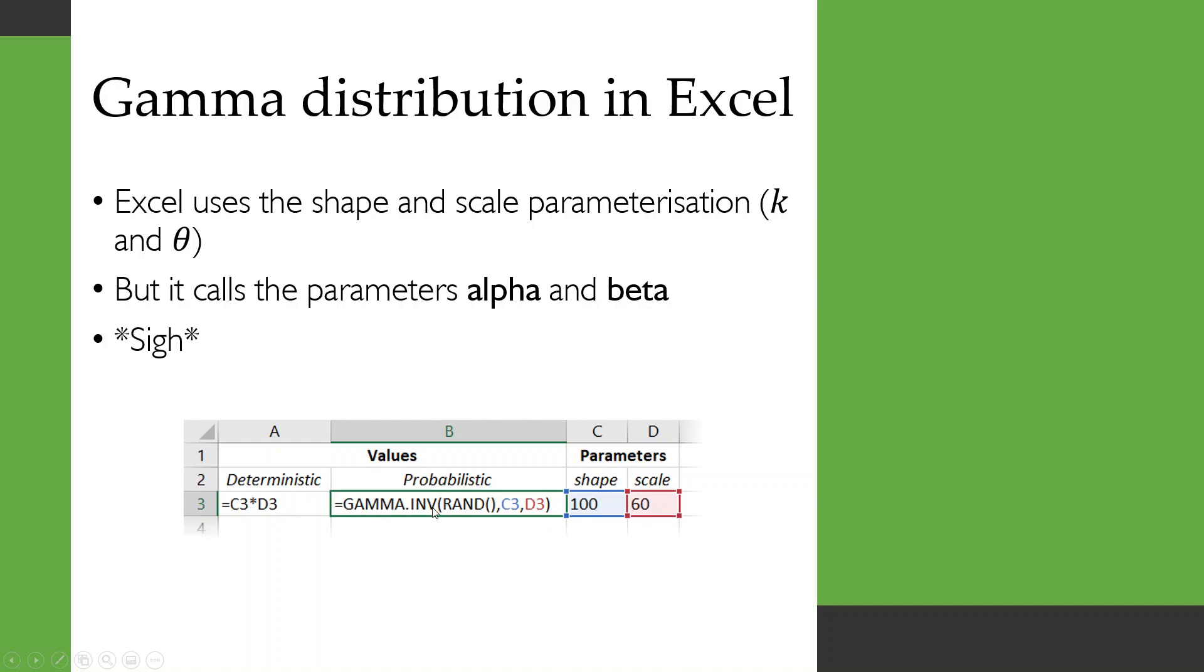And we've got this GAMMA.INV, pass it a random number between zero and one and then your shape and then your scale. And if you want the deterministic value to be the mean from that distribution then it's just the shape times the scale, that k theta that we saw on a previous slide.